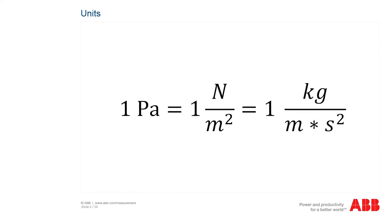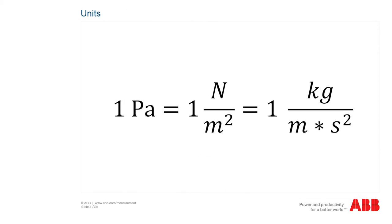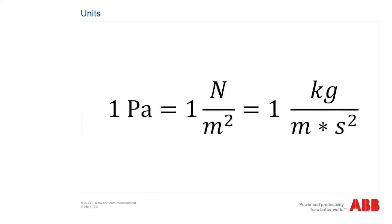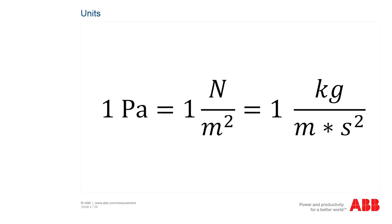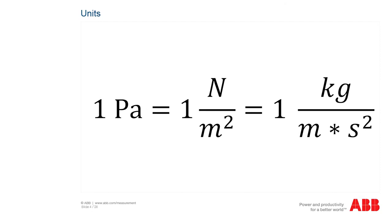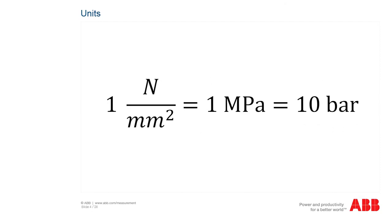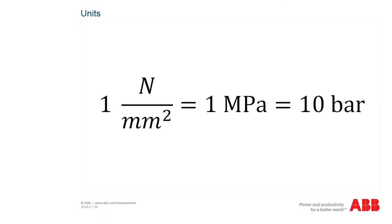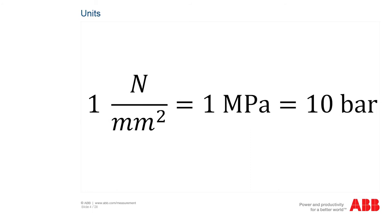The International System of Units, with the abbreviation SI — Système International de Unités — is the most widely used system of units for physical dimensions. The units of pressure are also specified in this system. Pressure is measured in Pascals, where one Pascal corresponds to one Newton per square meter. For greater pressures, the SI unit bar is used; one bar corresponds to 100,000 Pascal.